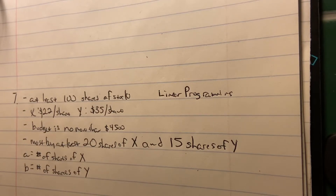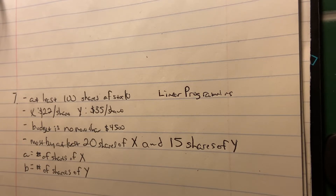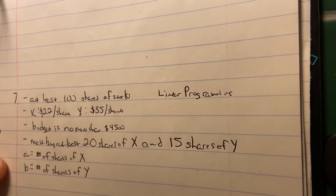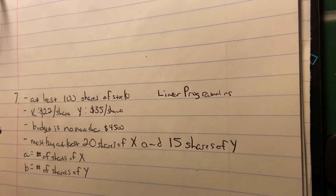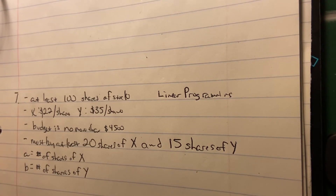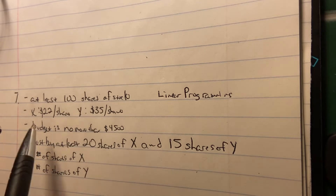Here's number seven from these SAT prep questions. This is really a linear programming question — when you're given certain parameters and you see phrases like 'at least' and 'no more than,' what these problems really let you know is that math is really about a language. Math is really a language.